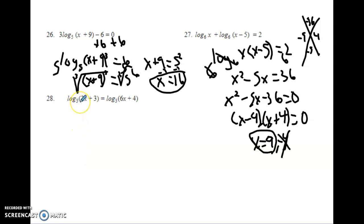Alright, number 28. We have a log on both sides. In the past, I've kind of looked at this and thought, well, I'm going to get them on the same side, but I could also just raise them to the power of 3. Raise each side to the power of 3, then the 3 and the log 3 cancel out, and you end up with 2x plus 3 equals 6x plus 4. Then, solve it like you would normal equations.